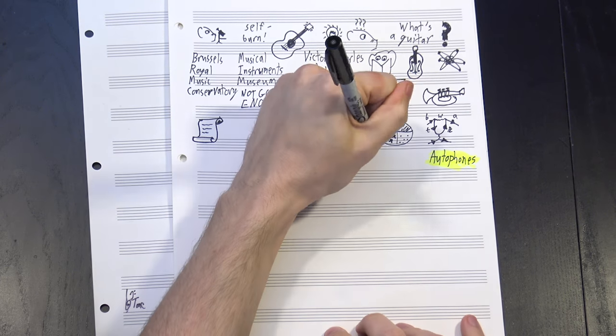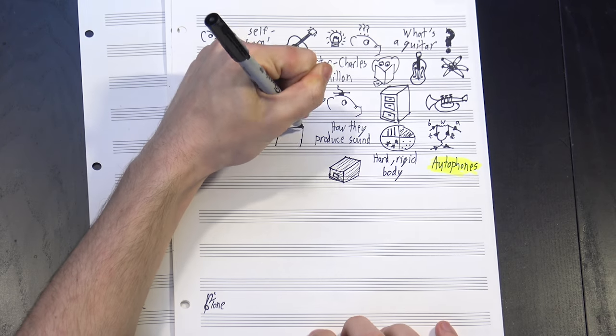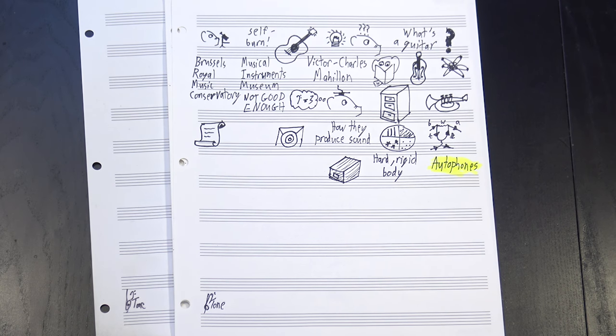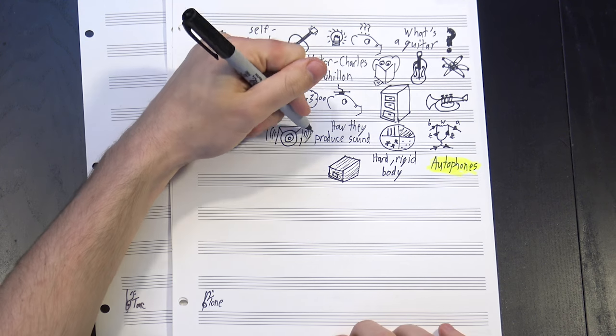The first group he called autophones. These make sound through the vibrations of a hard, rigid body, like a wood block or a gong. I'll let that ring for a bit. Okay, stop.